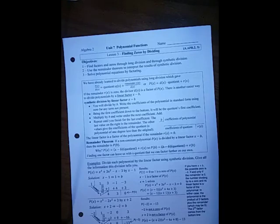Algebra 2, Unit 7, Lesson 3: Finding Zeros by Dividing. In this lesson, we want to find factors and zeros through long division and synthetic division, and then use a theorem known as the remainder theorem to interpret the results of synthetic division and solve polynomial equations by factoring.